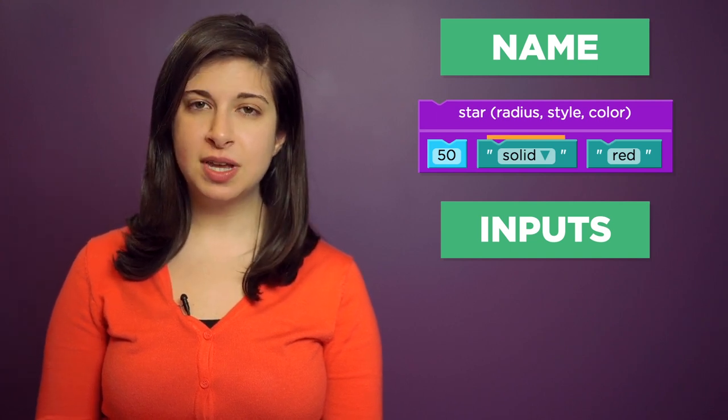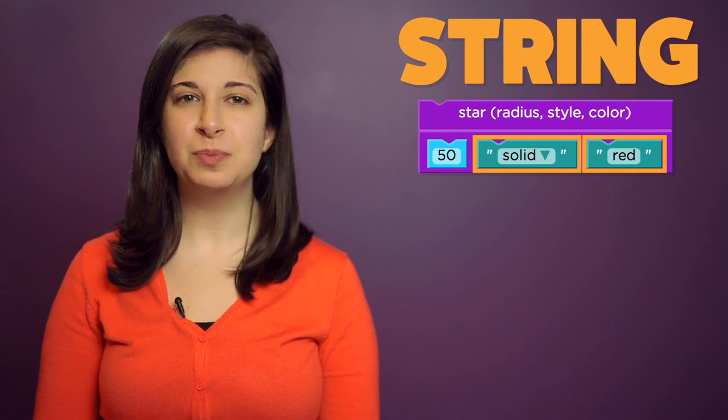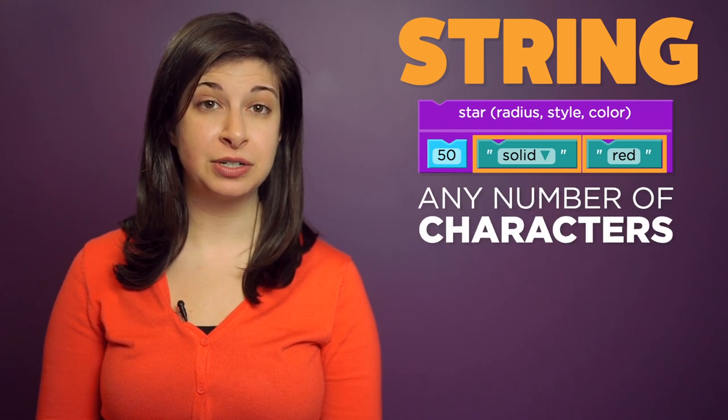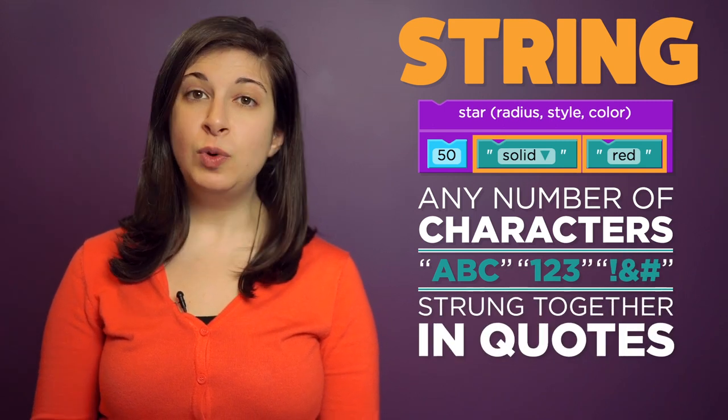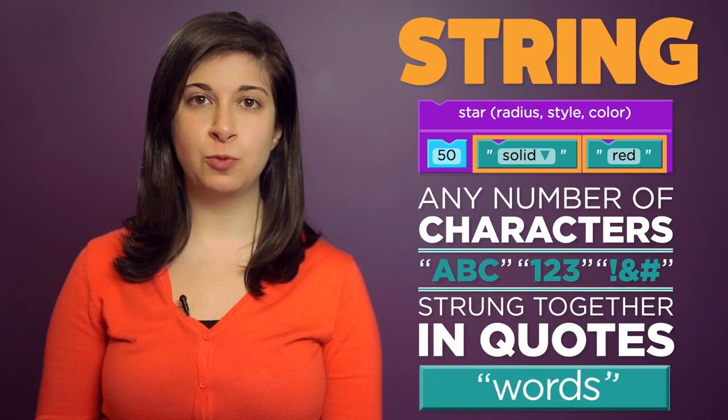The values solid and red are a new type of data called string. No, not like yarn. It's called a string because it is any number of characters, letters, numbers, even punctuation, strung together and surrounded by quotation marks. We usually use strings to represent words.